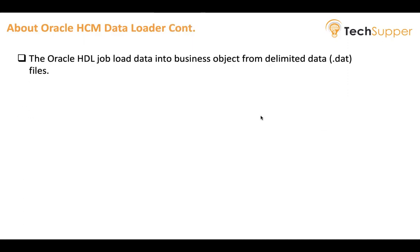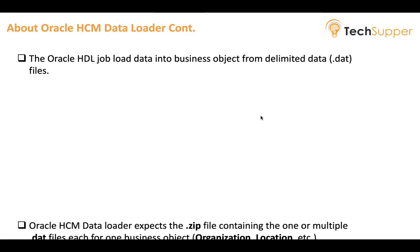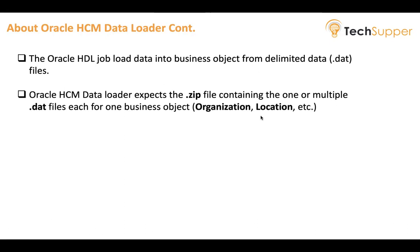Oracle HDL loads data into business objects using a file called a delimited data file. Like in FBDI we use a CSV file with comma separation — here, the file extension is .dat and uses a tab delimiter. The Oracle HCM Data Loader requires a zip file containing one or multiple .dat files, each for one business object like organization or location, whether you're doing it manually or in an automated way.